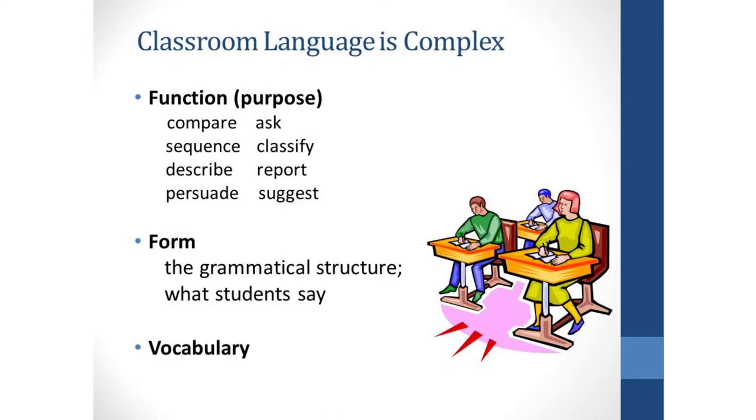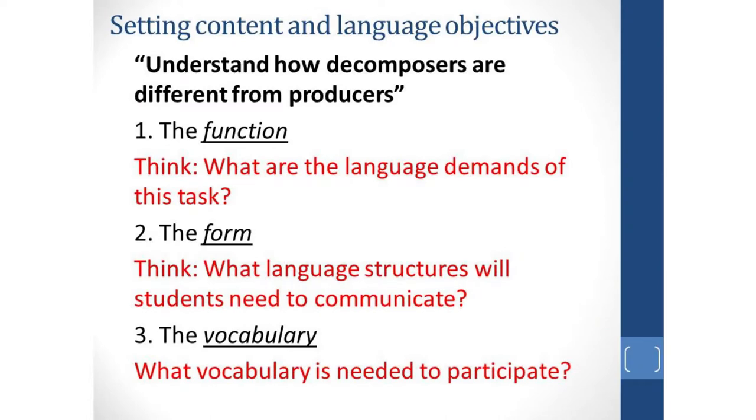And then there's the academic vocabulary. So with the earlier example, students will understand how decomposers are different from producers. The teacher thinks, what are the language demands of this task? What am I asking my students to do? So you can see that we're comparing decomposers and producers. But before that, the students are probably going to need to define what a decomposer is and what a producer is.